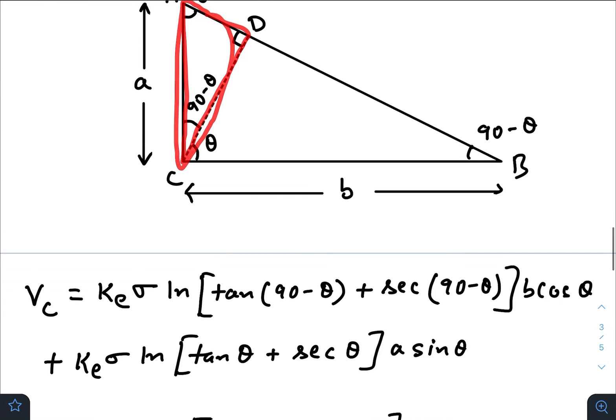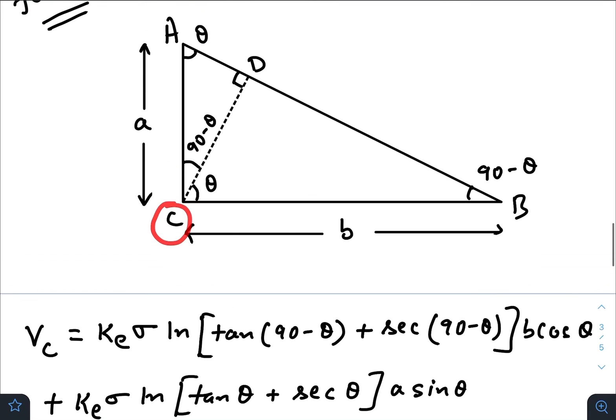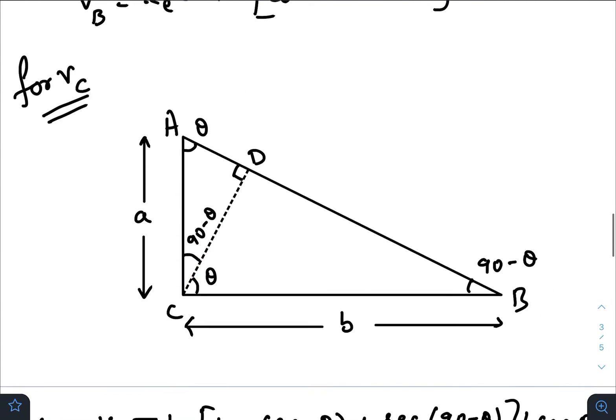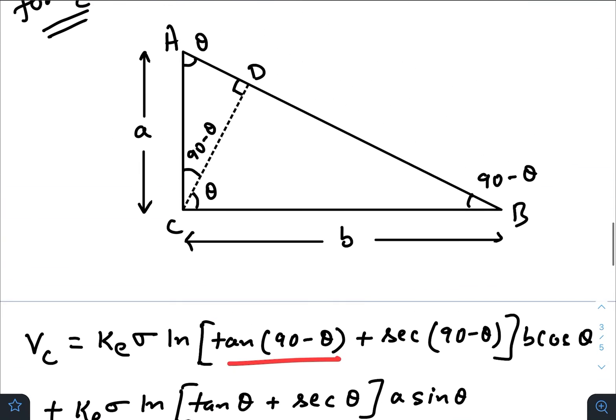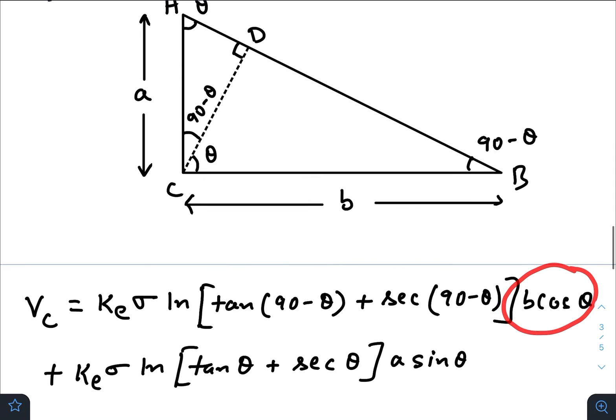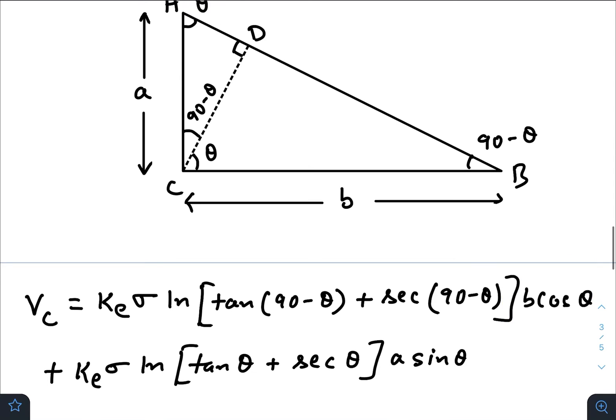For this triangle, potential at C would be again k_e sigma ln—angle with the base is 90 minus theta—so tan 90 minus theta, remember the formula. So tan 90 minus theta, sec 90 minus theta, times length of the base. So length of the base is b cos theta. Fine, great.